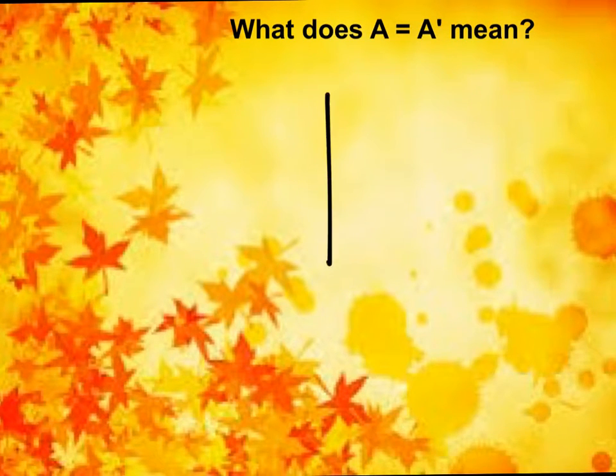Now you know that happens if this is the line of reflection. This point here, A, would go nowhere. It would land right back where it started.